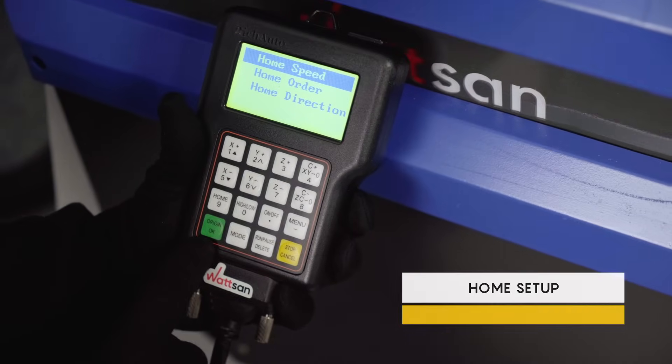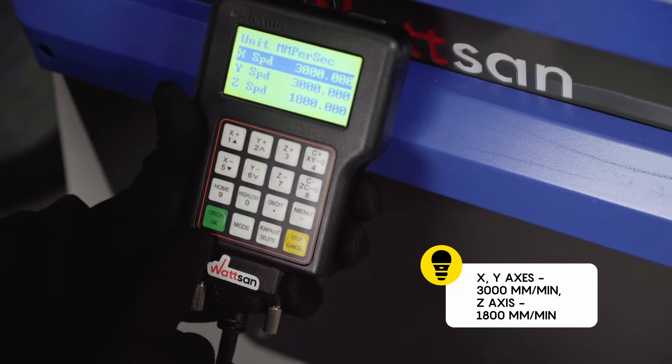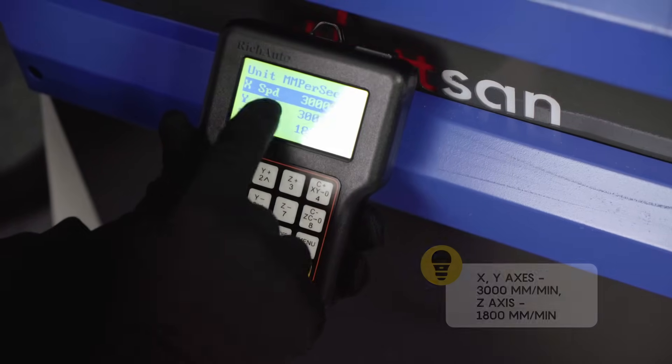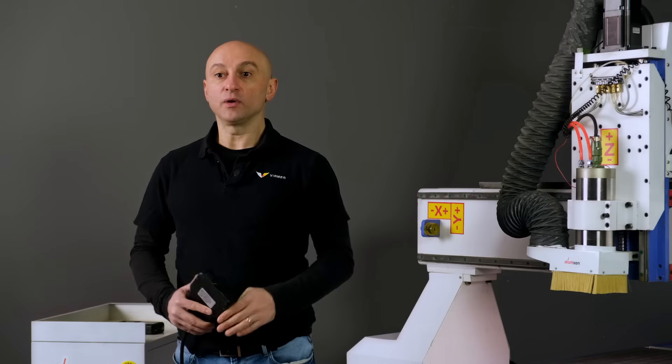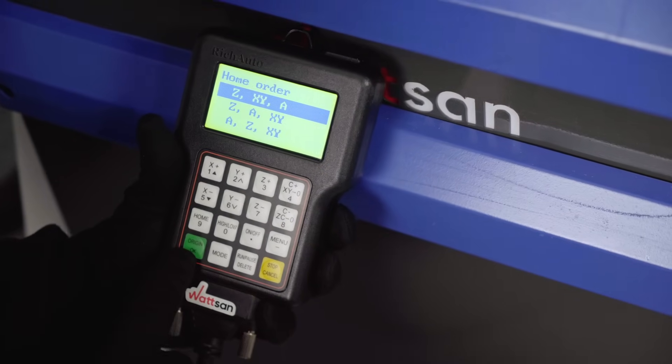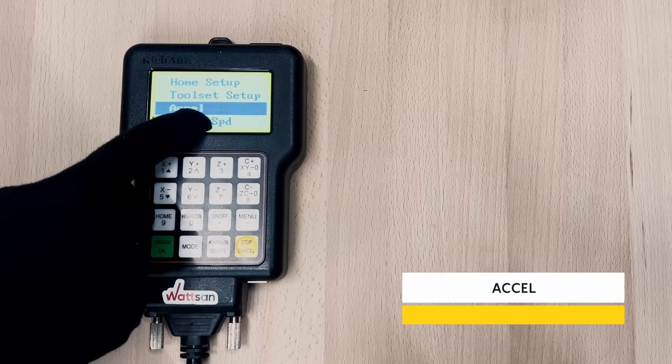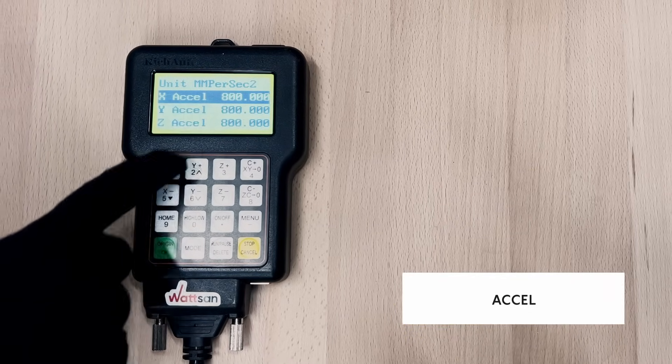Home Setup: here you can set the return to home position speed. By default, the X and Y axis are 3000 millimeters a minute, and the Z axis is 1800 millimeters a minute. You can also set the order for returning to the original position along the axis and their polarity.